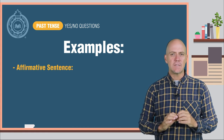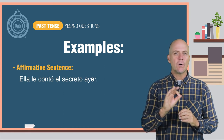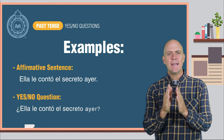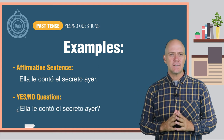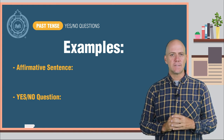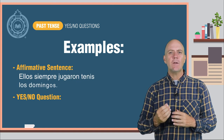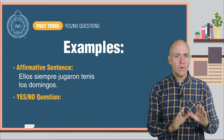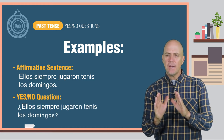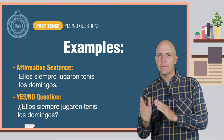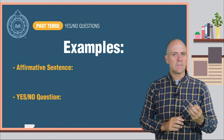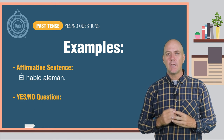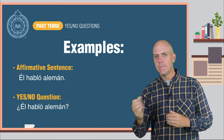Affirmative sentence: Ella le contó el secreto ayer. Yes-no question: Ella le contó el secreto ayer. Affirmative sentence: Ellos siempre jugaron tenis los domingos. Yes-no question: Ellos siempre jugaron tenis los domingos. Affirmative sentence: Él habló alemán. Yes-no question: Él habló alemán.